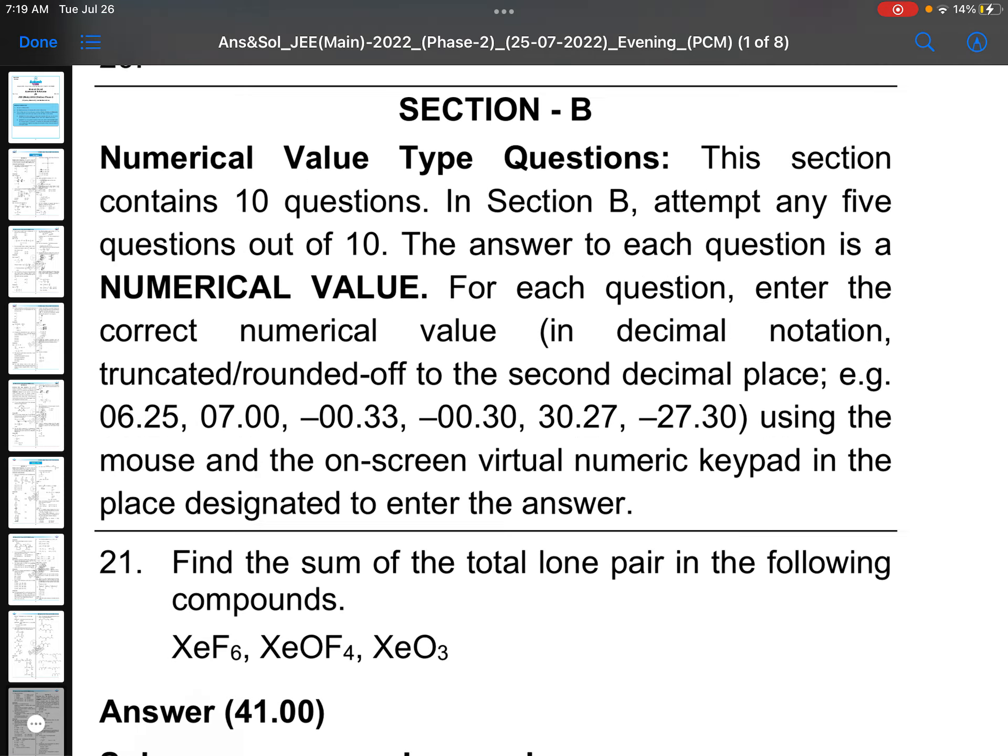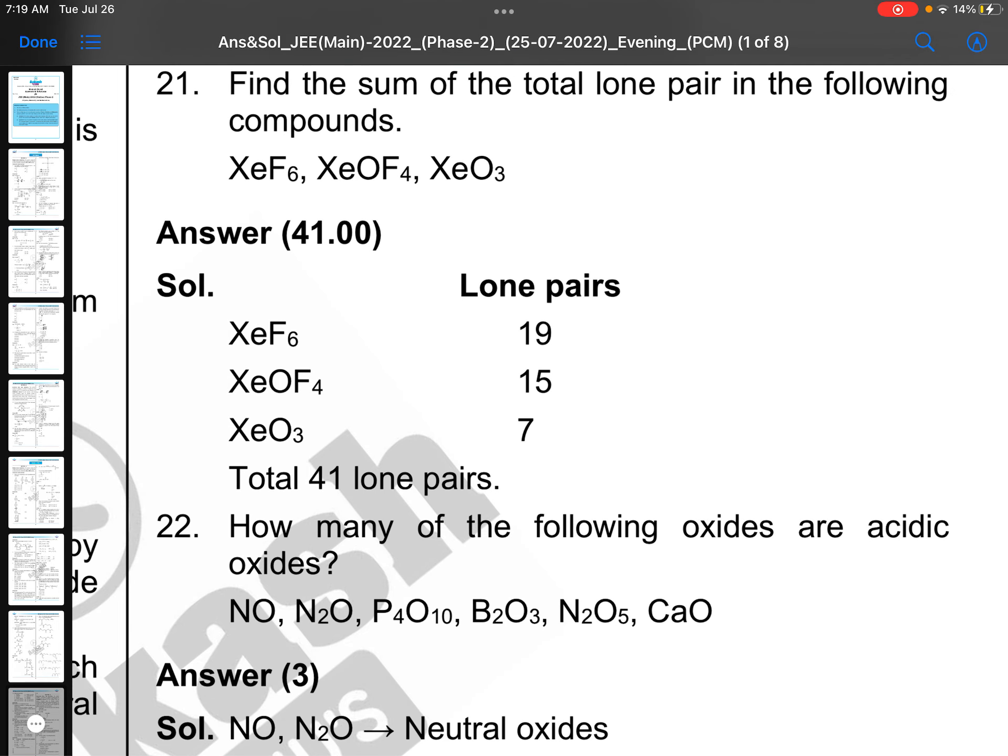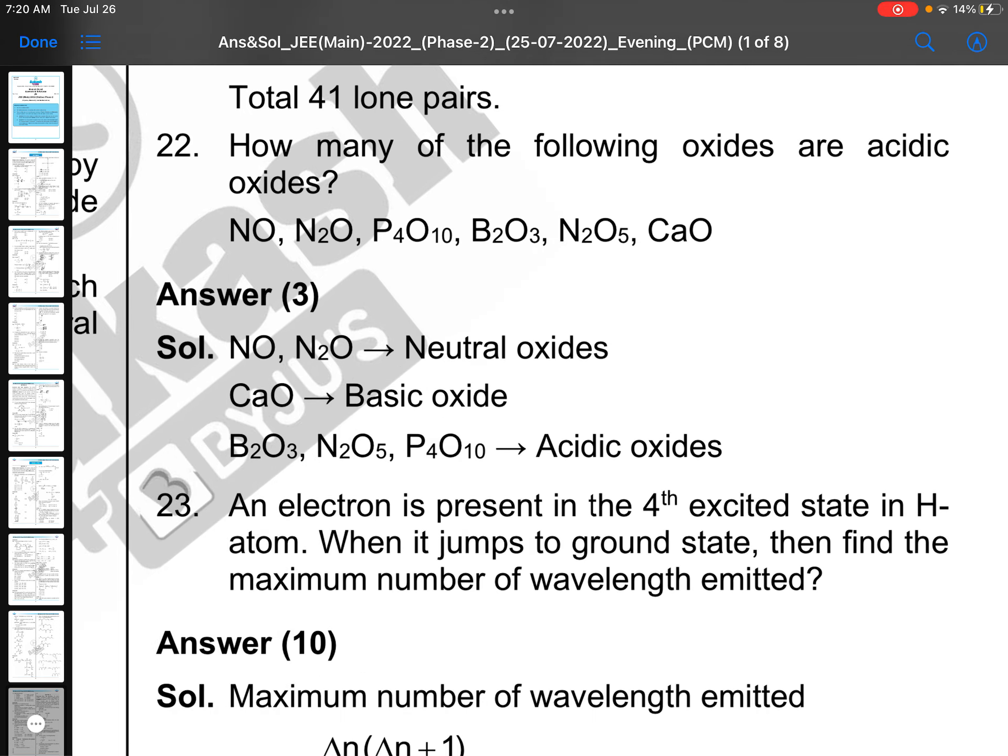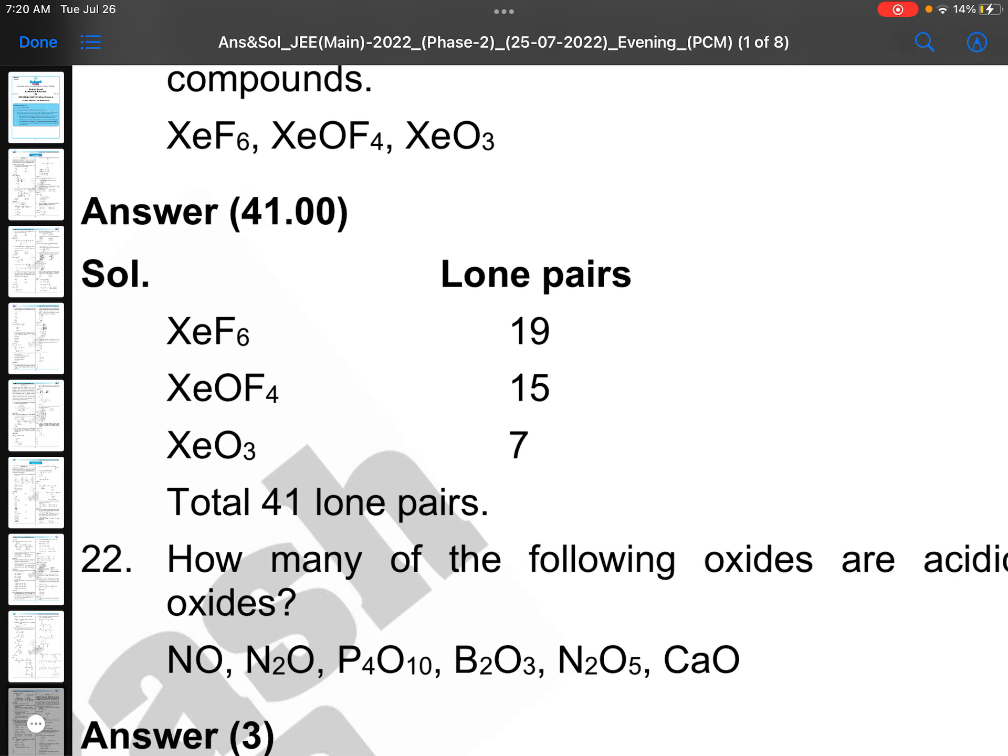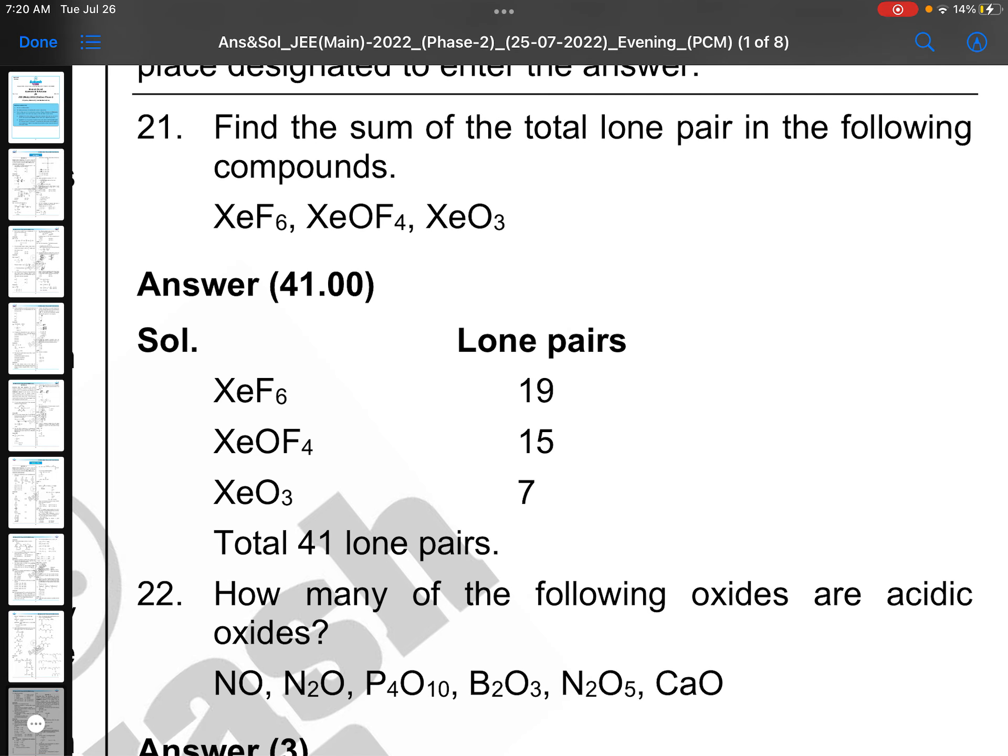This is a memory based paper, we will check the remaining one. The sum of the total lone pairs in the following compounds: XeF6 xenon one lone pair, 6 fluorines each 3, so total 19. XeOF4 xenon will be having one lone pair, oxygen two lone pairs, and four fluorines are there each 3, 15. XeO3 one xenon with one lone pair, 3 oxygen with two lone pairs each, total 41 lone pairs. When this kind of questions are there, you see carefully whether the lone pairs in the molecule they are asking or central atom. You must be very careful about this.